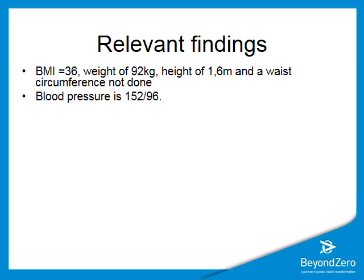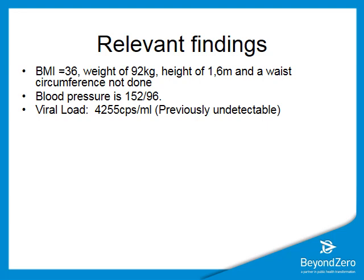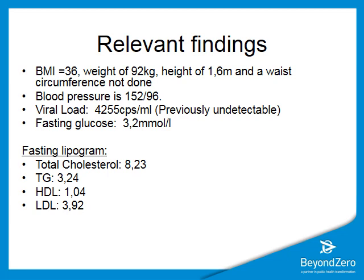Her blood pressure is 152 over 96. Her viral load was 4,255 — remember, she's already on second line, and up to now her viral loads have been undetectable. Fasting glucose is 3.2. The fasting lipogram shows a total cholesterol of 8.23, which is very high; triglycerides 3.24, also high; HDL of 1.04, which is low; and LDL of 3.92, also high. Creatinine clearance is 62 millilitres per minute, which is fortunately normal.